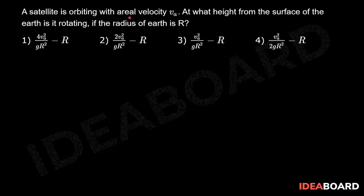A satellite is orbiting with the aerial velocity Va. At what height from the surface of the earth is it rotating if the radius of the earth is R?